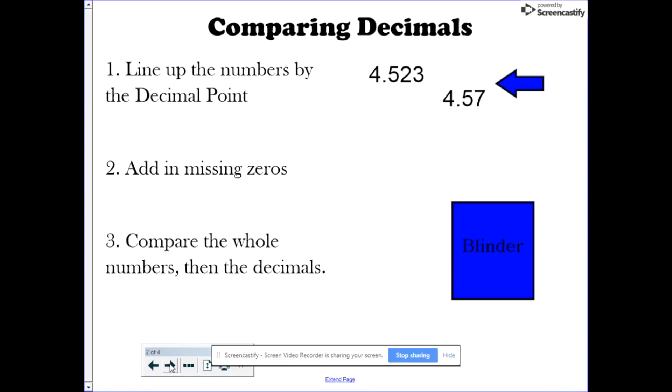First, you line up the numbers by the decimal point. Second, you add in missing zeros. And what I mean by that is whenever you have a place value represented in one number but not the other, you put a zero in to kind of fill that void.